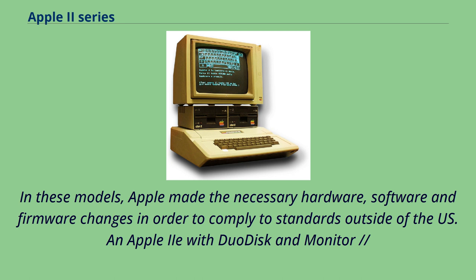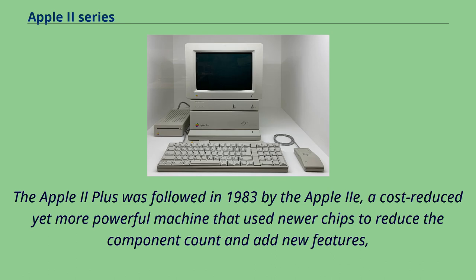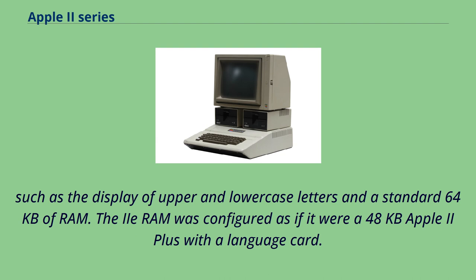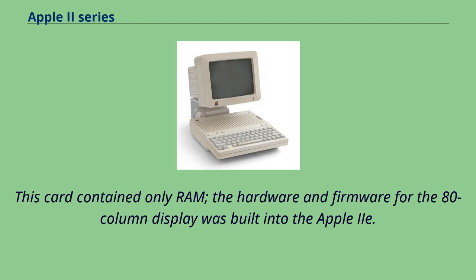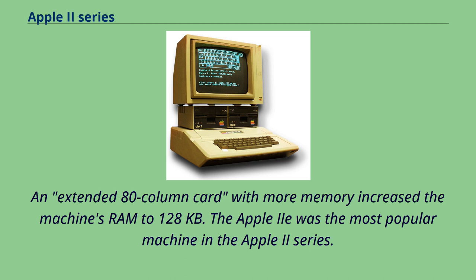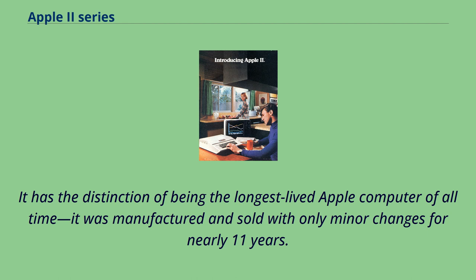The Apple II Plus was followed in 1983 by the Apple IIe, a cost-reduced yet more powerful machine that used newer chips to reduce component count and add new features, such as the display of upper and lowercase letters and a standard 64KB of RAM. The IIe had an auxiliary slot that could accept a 1KB memory card to enable the 80-column display, and an extended 80-column card with more memory increased the machine's RAM to 128KB. The Apple IIe was the most popular machine in the series and the longest-lived Apple computer, manufactured for nearly 11 years, discontinued in November 1993.